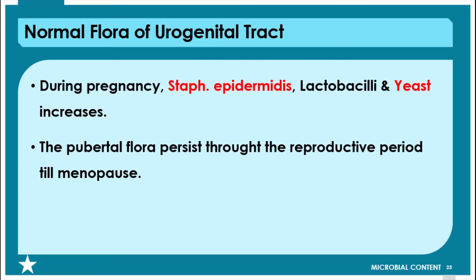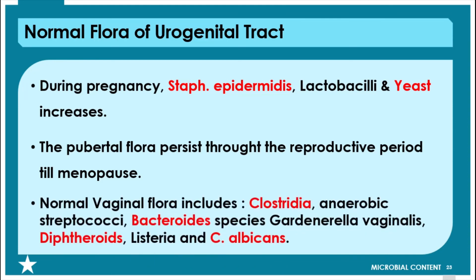The pubertal flora persists throughout the reproductive period till menopause. The normal vaginal flora includes Clostridia, anaerobic Streptococci, Bacteroides species, Gardnerella vaginalis, Diphtheroids, Listeria, and Candida albicans. This concludes the normal flora of the human body.